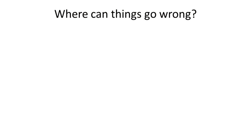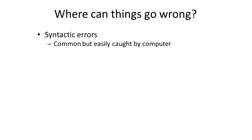When we have these different pieces, we can think about what can go wrong — what can cause problems in the system. We can get errors, or bugs, in all parts of the language. Syntactic errors are quite common, but they're also easily caught by the computer. A modern interpreter can check for syntactic errors before you run the program, and good systems will point you to the place and suggest what you need to fix.